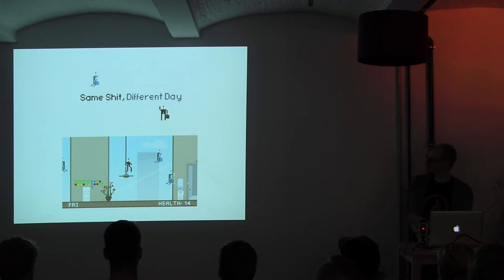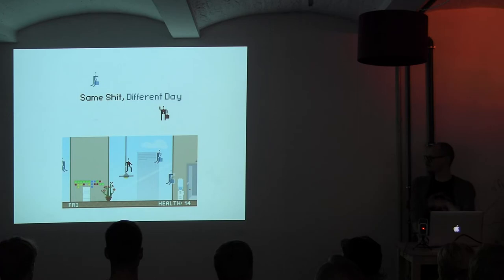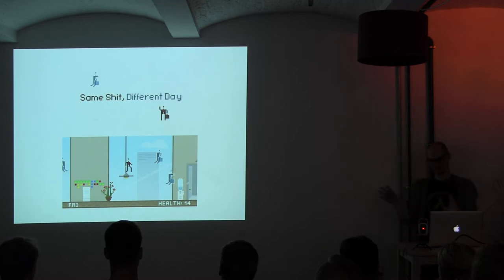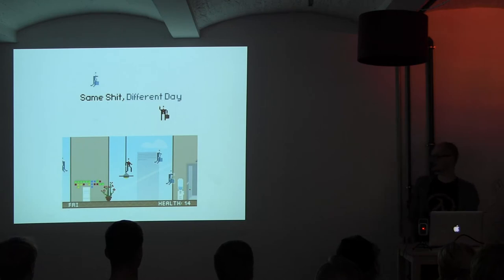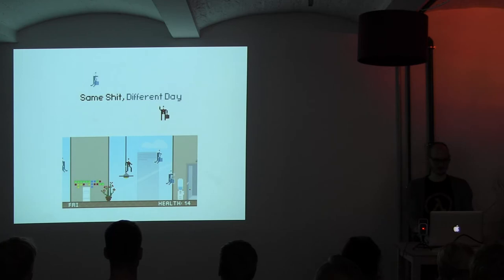In the game, the guy enters the office through an elevator, runs through it, and exits — but arrives back at the same floor. The second day, his run from the first day appears as a ghost haunting him. By the end of the week there are four ghosts, all replays of previous runs. The only way to win is basically to die.